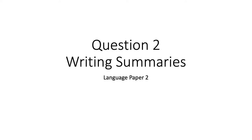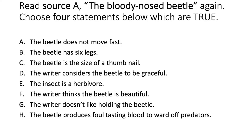Today we're going to look at how to write a summary for question 2, language paper 2. First of all, I would like you to read source A, entitled The Bloody Nosed Beetle, and have a go at stating which of these statements are true or false. You are looking for four statements, so out of A to H, which four are true?